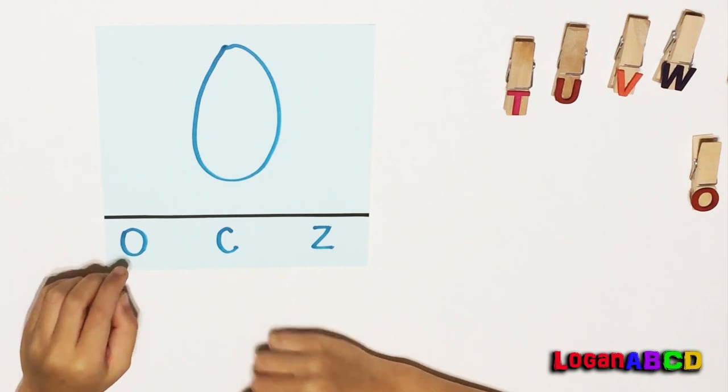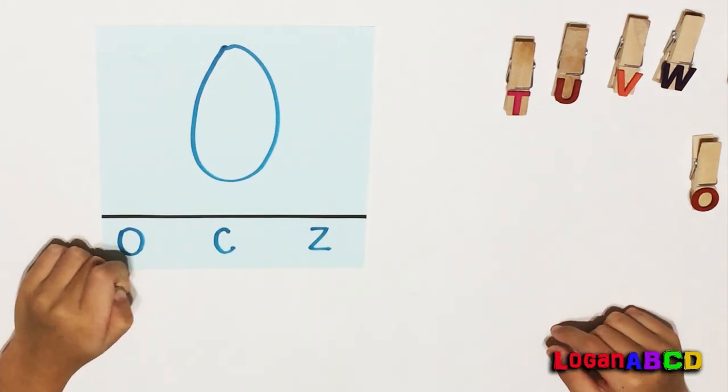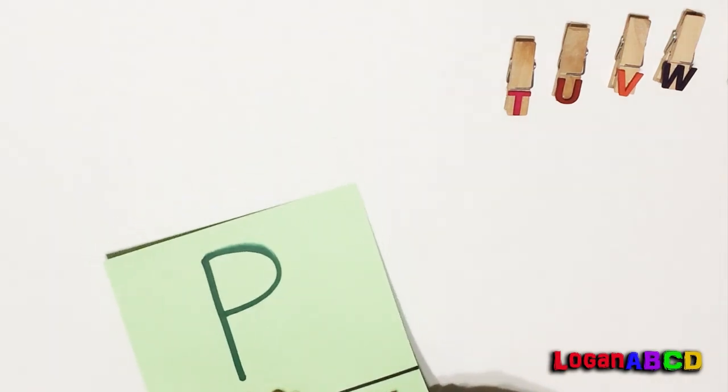O, lowercase is O. O for owl. Coo, coo, coo, coo, coo.